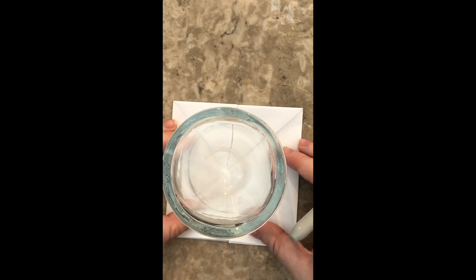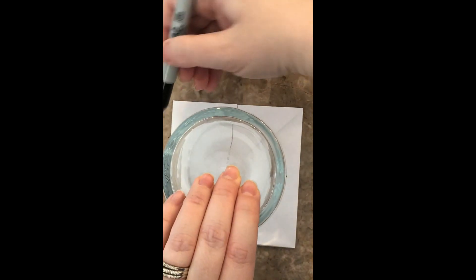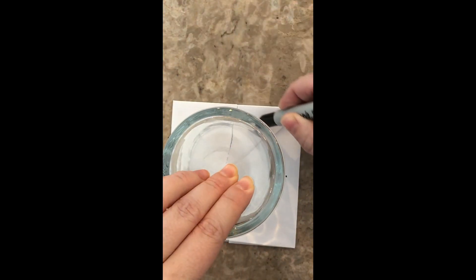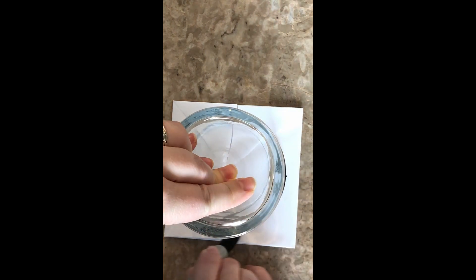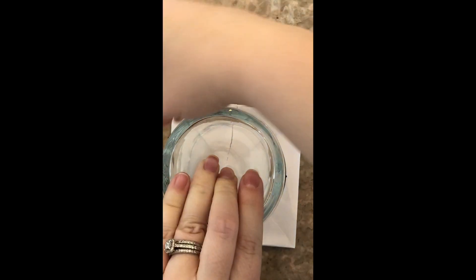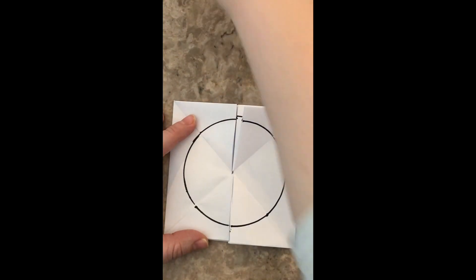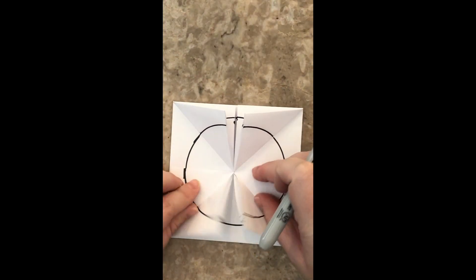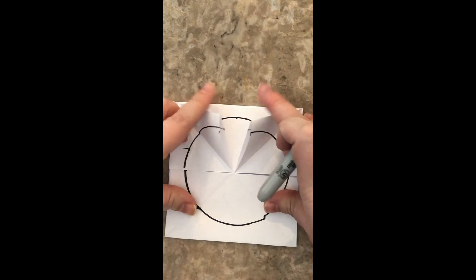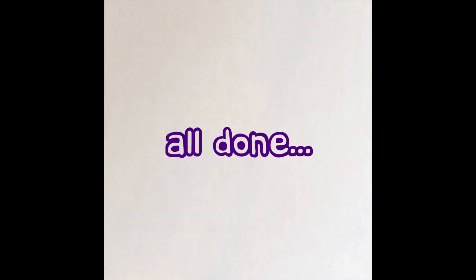Do one more flippity flip flip flip. And trace around a third time. Excellent. Look at all the circles. All done.